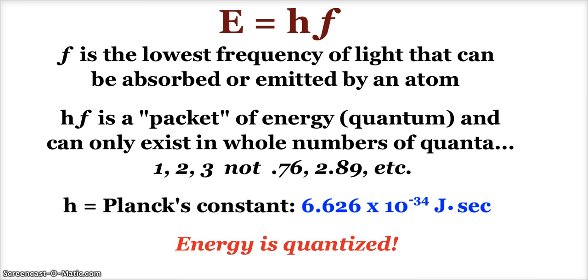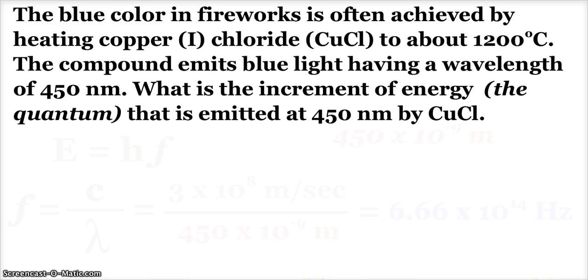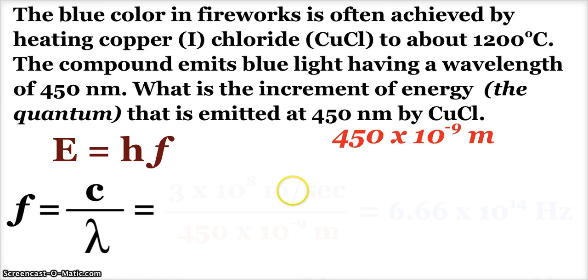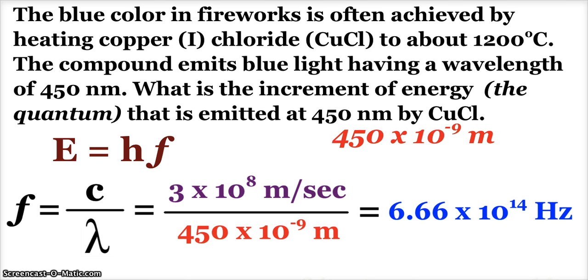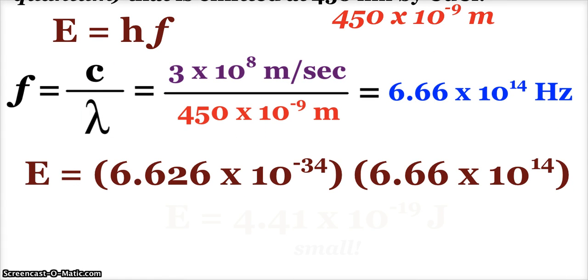So let's see a calculation. The blue color in fireworks is courtesy of copper 1 chloride heated up to about 1200 degrees Celsius. So the blue light comes out with a wavelength of 450 nanometers. What is the increment of energy, the quantum that is emitted or associated with 450 nanometers? So again, we know that E equals Planck's constant times frequency. We don't have frequency. But remember we just saw that we can get frequency by taking the speed of light divided by the wavelength. And again, I like to say the wavelength 450 times 10 to the negative 9th meters. Plug and chug. And ooh, just in time for Halloween, a little satanic frequency: 6.66 times 10 to the 14th hertz.